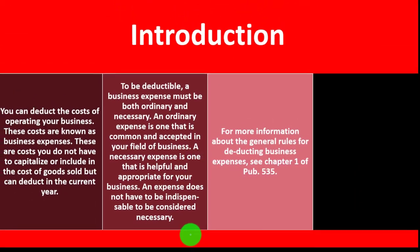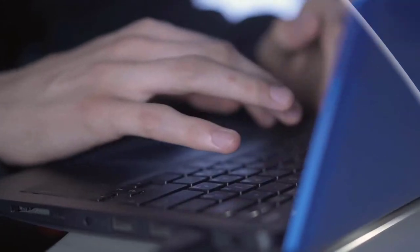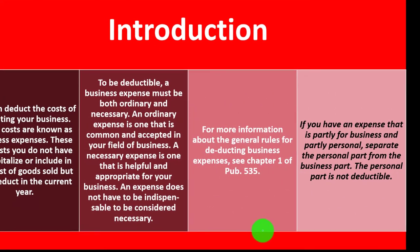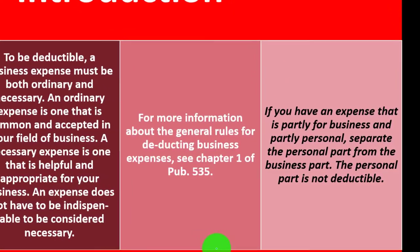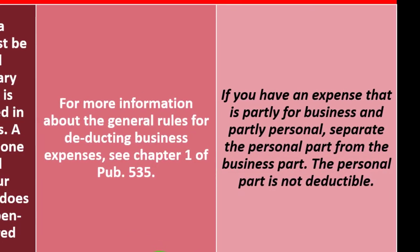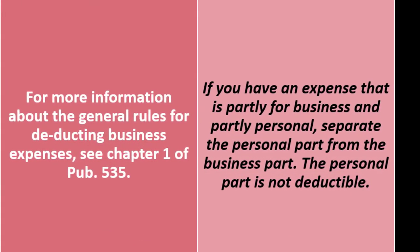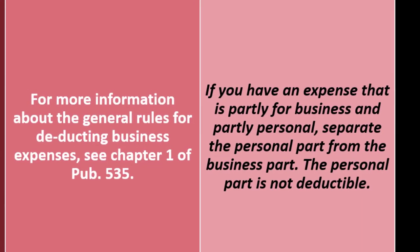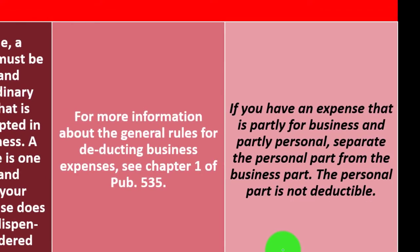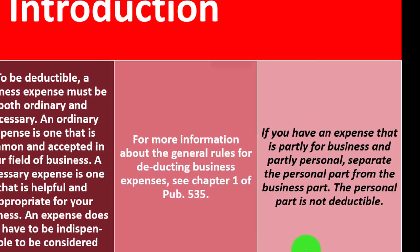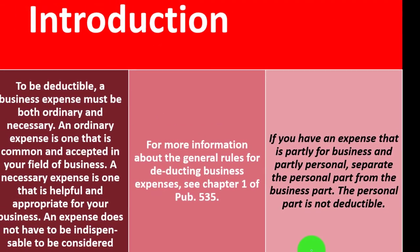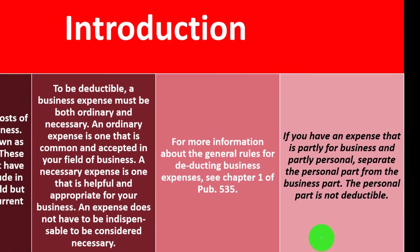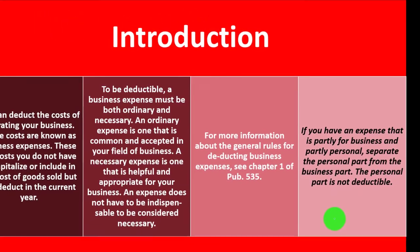For more information about the general rules for deducting business expenses, see Chapter 1 of Publication 535, which you can find on the IRS website. If you have an expense that is partially for business and partially for personal, here's where it gets confusing: separate the personal part from the business part, but they're stuck together really tight. The personal part is not deductible, and this is where many small businesses have a lot of problems.